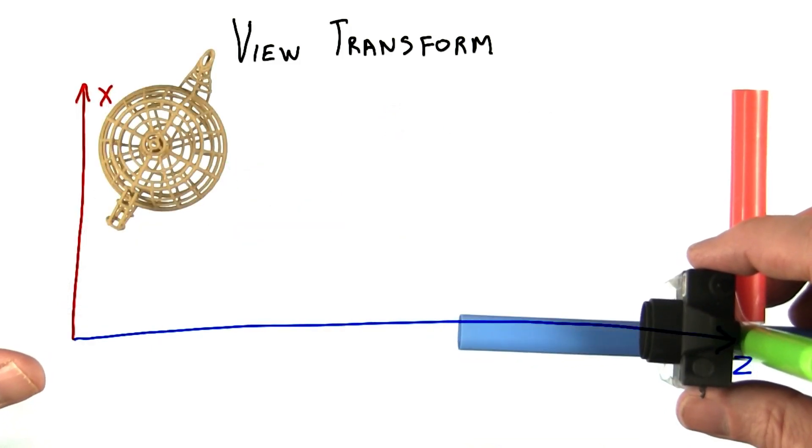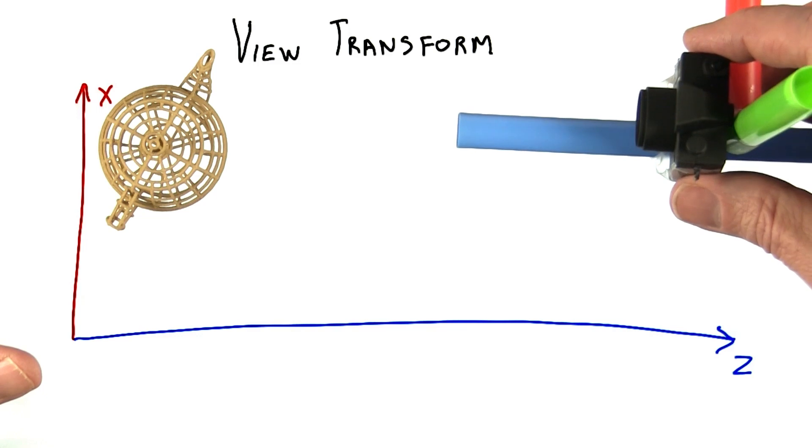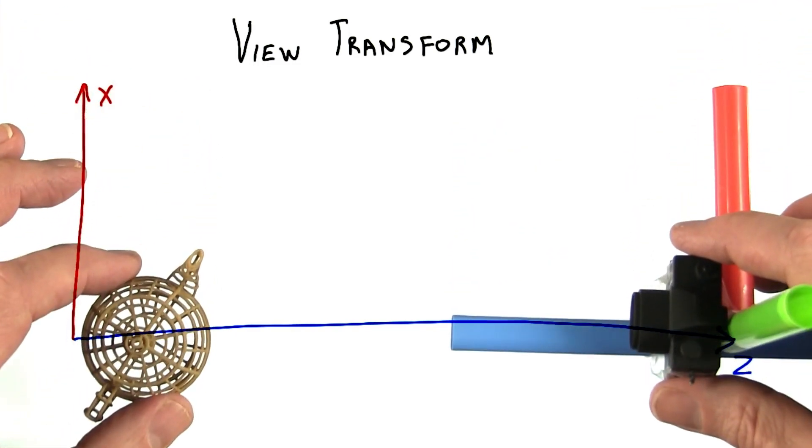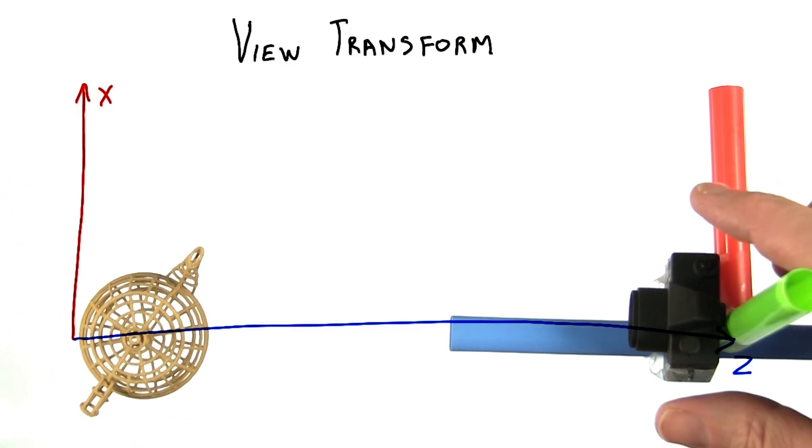Here's a camera and a model. Say we slide the camera 5 units along the world's x-axis. From the camera's point of view, if we subtracted 5 from all the world coordinates, everything would be nicely oriented for the camera.